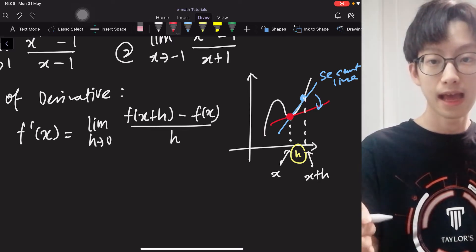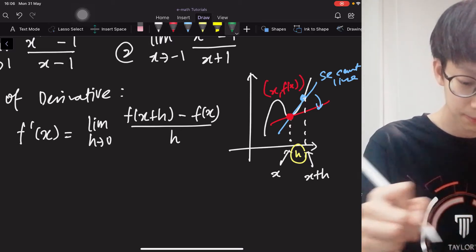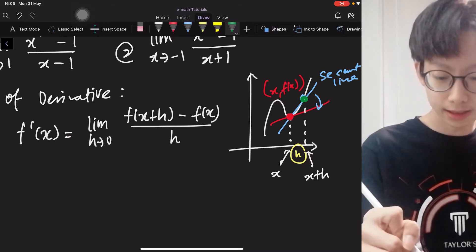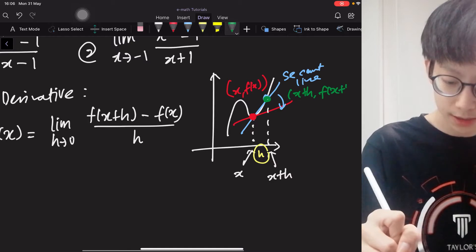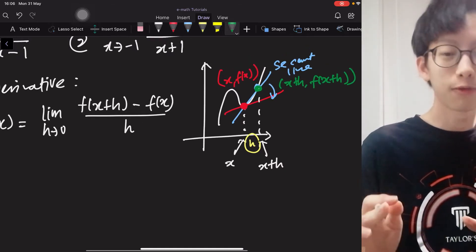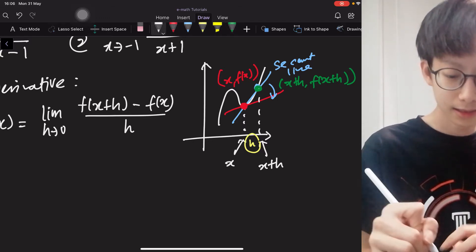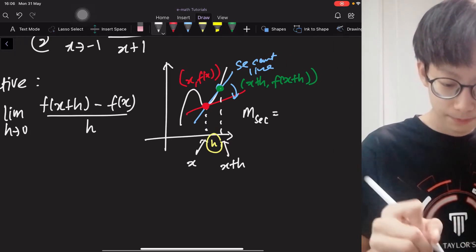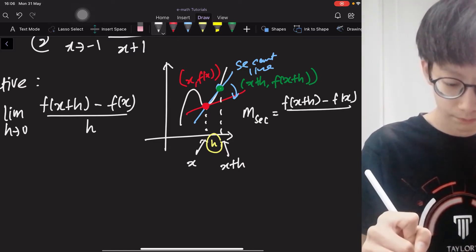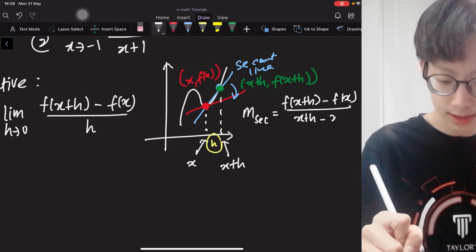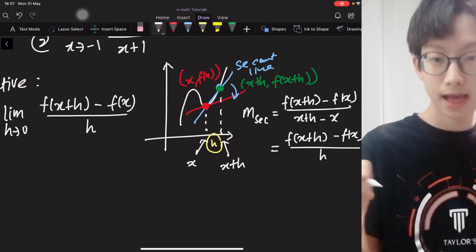Okay? So if this point, the one in red, if it is (x, f(x)), then automatically this point, the one in green, it is (x+h, f(x+h)). So the slope of the secant line is f(x+h) minus f(x) over (x+h) minus x, which is f(x+h) minus f(x) over h.